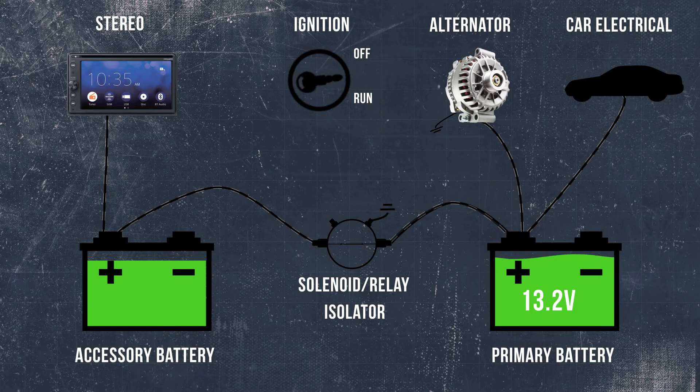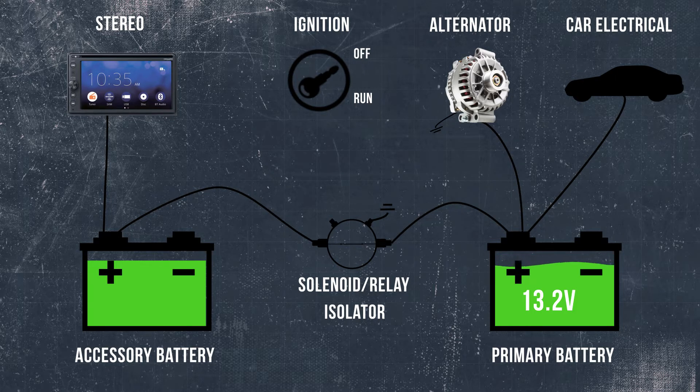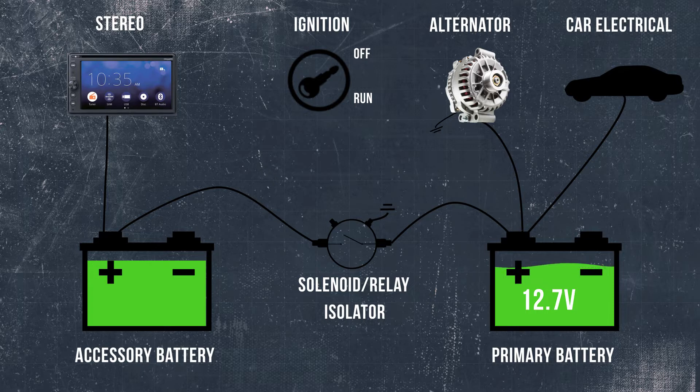When the ignition is turned off and the whole system drops below 12.7 volts, the solenoid opens and isolates the starter battery from the auxiliary battery. This ensures you should never have a drained starter battery again.